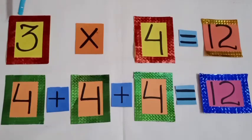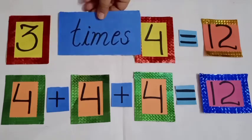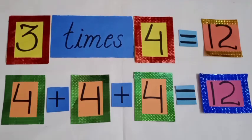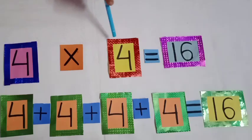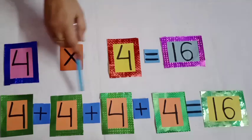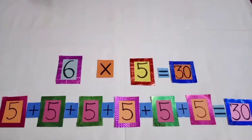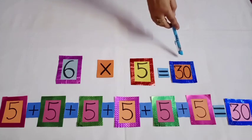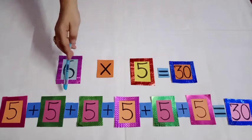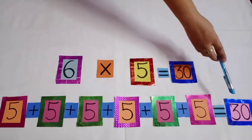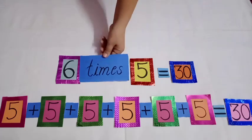Dear students, 3 multiplied by 4 is equal to 12. It means 3 times 4 — 4 will be added 3 times and it will be 12. 4 multiplied by 4 is equal to 16. It means we have to add 4 groups of 4 and it will be 16. 6 multiplied by 5 is equal to 30 — it means we have to add 5, six times, and it will be 30. 6 times 5.